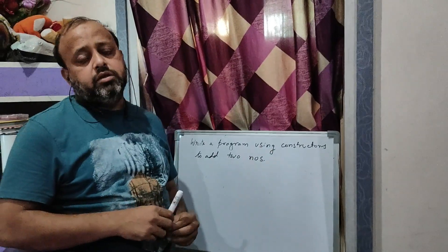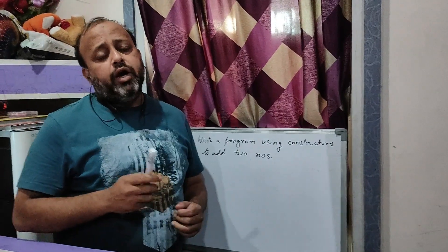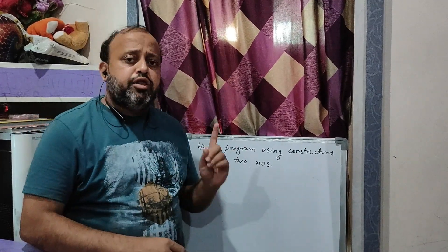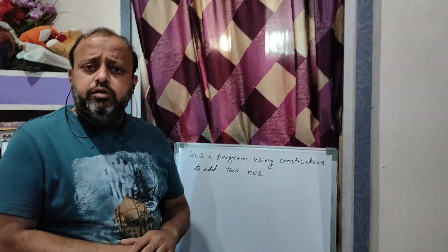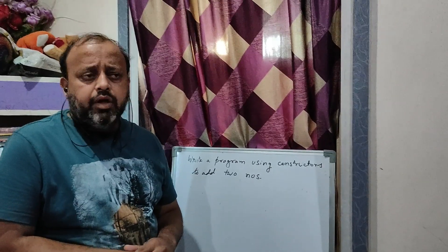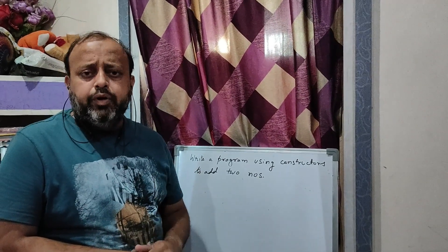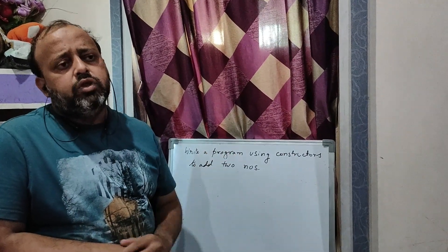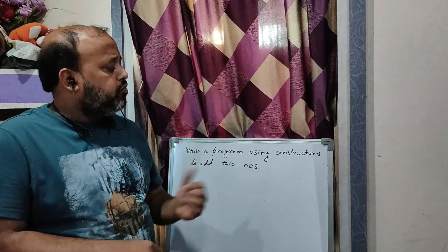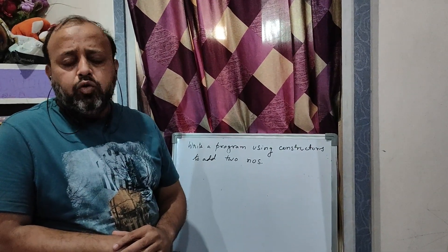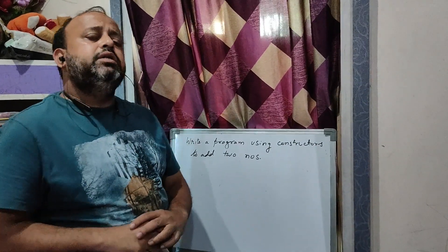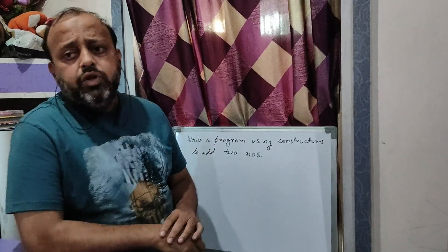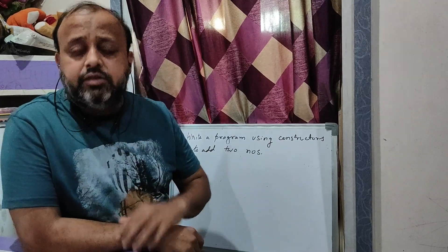Today I am here to discuss question 4 of ICSC computer application paper. In ICSC section B you normally have 6 programs, among which 4 are compulsory. In coming videos, for every question I will be discussing one question with you all. Today I will discuss question number 4, which covers constructors and parameterized constructors.